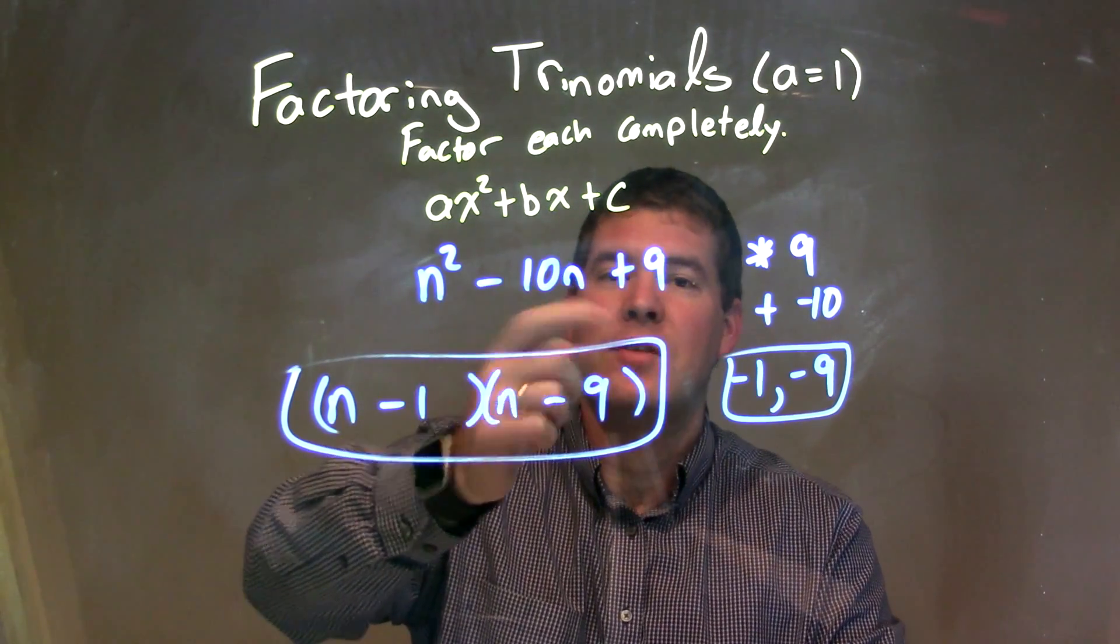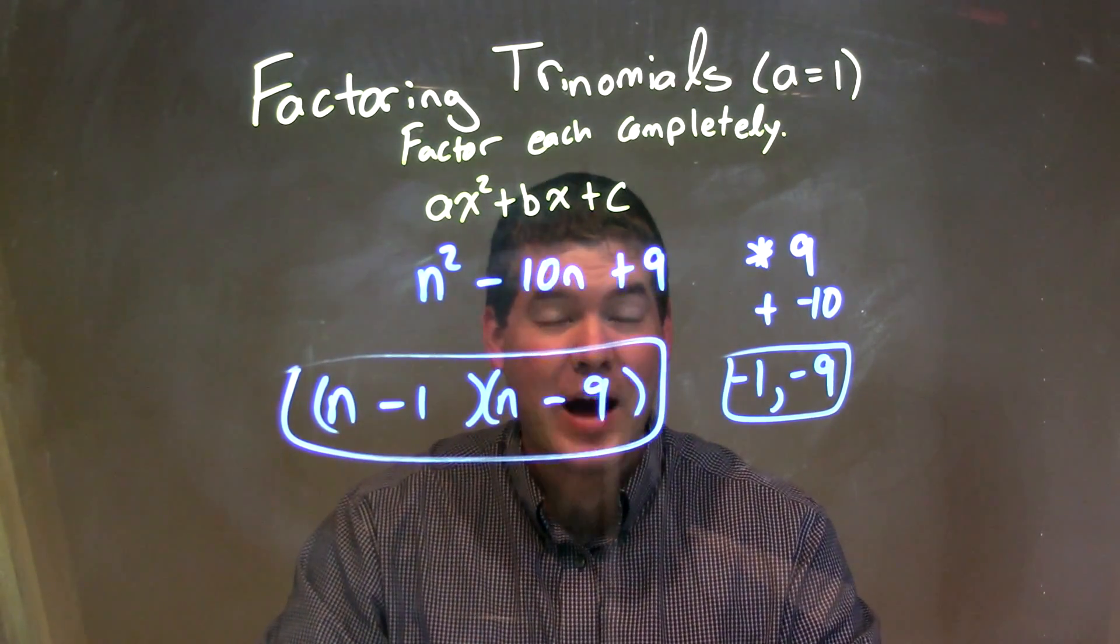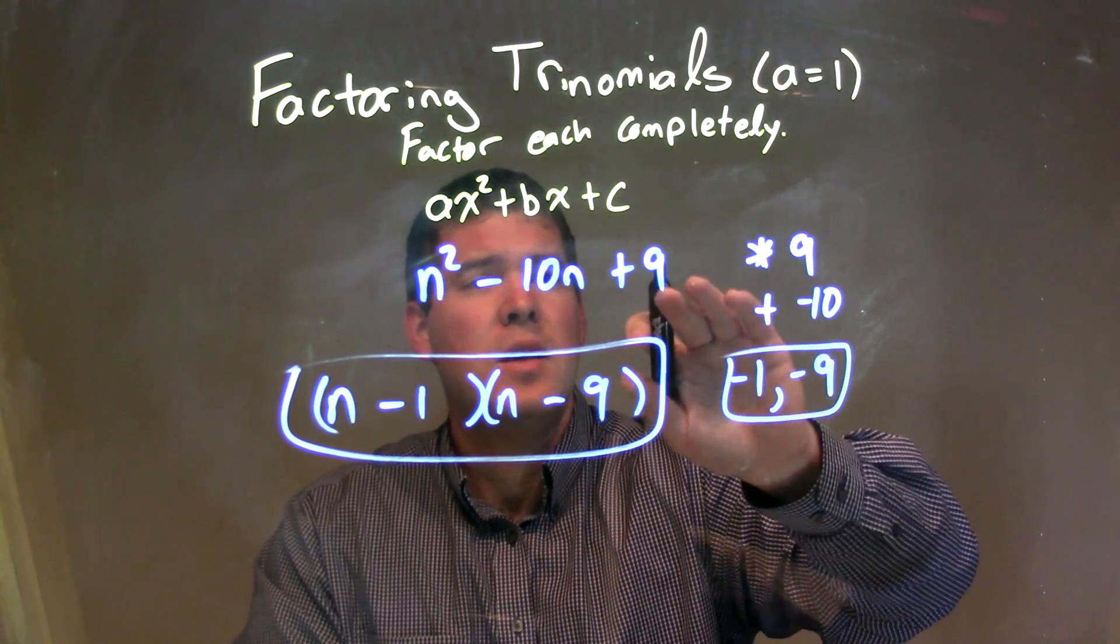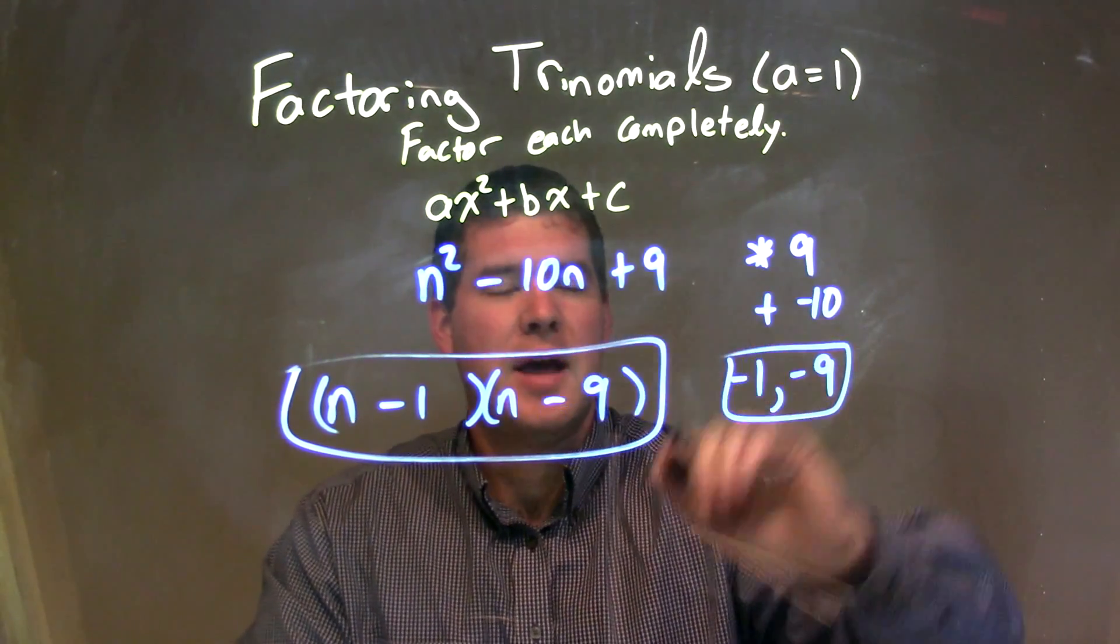So let's recap. We're given n squared minus 10 plus 9, and I need to factor that trinomial. Since our a value is 1, I said, okay, what two numbers multiply by 9, but add to be a negative 10?